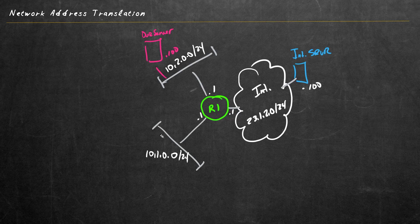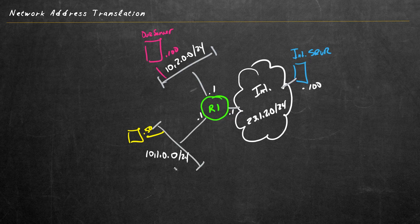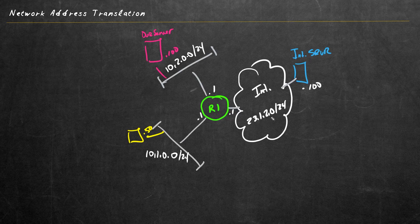For the server on the 10.2.0 network, we'll give it the IP address of 10.2.0.100. We also need a client device on the 10.1.0 network, and we'll give that the IP address of 10.1.0.50. The server and client will use R1 as their default gateway. From a routing perspective, router one would have directly connected networks for 10.1.0, 10.2.0, and also 23.1.2.0 in its routing table.